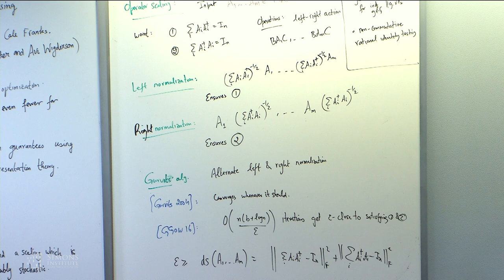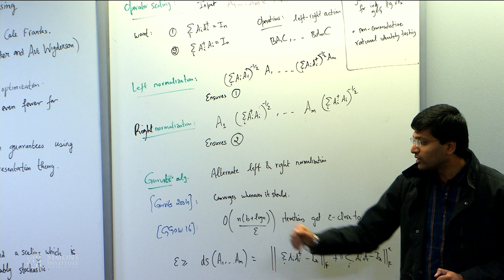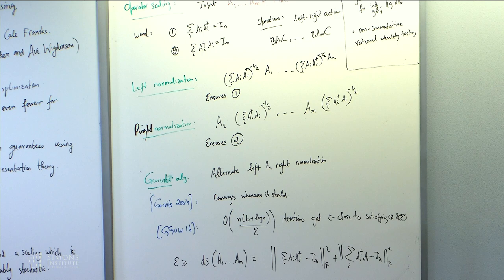In joint work with Garg, Leonid, Rafael, and Avi, we proved that in N log N over epsilon iterations, you get epsilon-close to satisfying the operator scaling conditions. The bound is exactly the same as in the matrix scaling case. Epsilon-close means the sum of the outer products minus identity, in Frobenius norm squared, is small in both conditions.